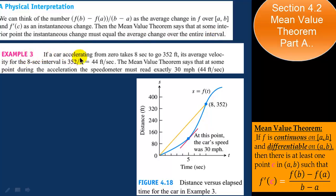For example, in example 3 of your book, if a car accelerating from 0 takes 8 seconds to travel 352 feet, its average velocity would be 352 divided by 8, which equals 44 feet per second. The mean value theorem says that at some point during the acceleration, the speedometer must read exactly 44 feet per second. Here the secant line joins the origin up to point A at 352, and at t equal to 5 seconds, the slope of the line tangent to the curve equals exactly 44 feet per second.